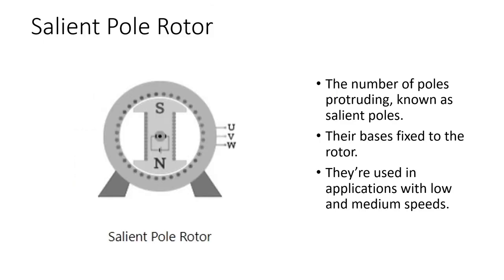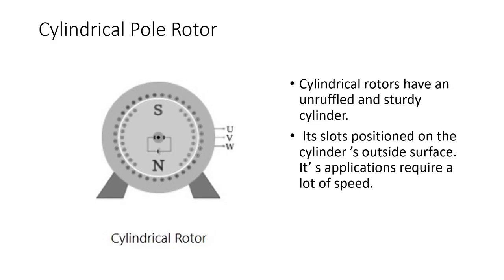Salient pole rotors have a number of poles protruding outward, known as salient poles. Their base is fixed to the rotor and they are used in applications with low and medium speeds. A cylindrical pole rotor has a smooth and sturdy cylinder, with slots positioned on the cylinder's outside surface, and its applications require high speed.